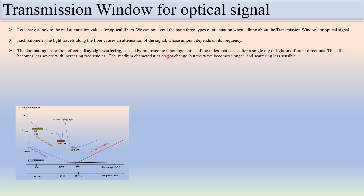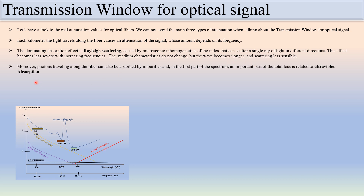Rayleigh scattering is caused by microscopic inhomogeneities of the refractive index that can scatter a single ray of light in different directions. This effect becomes less severe with increasing frequency — with the increase of frequency, this Rayleigh scattering attenuation decreases. The medium characteristics do not change but the wave becomes longer and gets less sensitive. Moreover, photons traveling along the fiber can also be absorbed by impurities, which is the second type of attenuation.